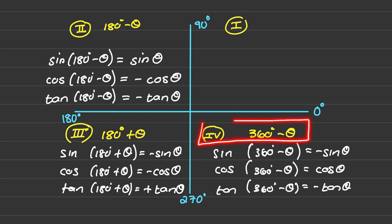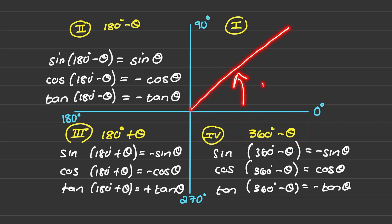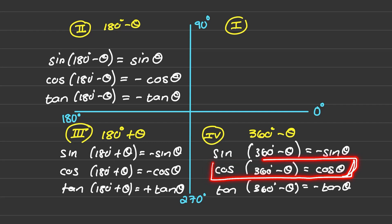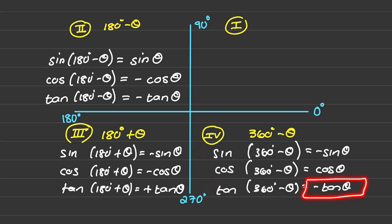In the fourth quadrant we use 360 degrees minus theta. Only cosine is positive there, so cosine(360 minus theta) reduces to cos theta, while sine and tan both reduce to negative sine theta and negative tan theta.